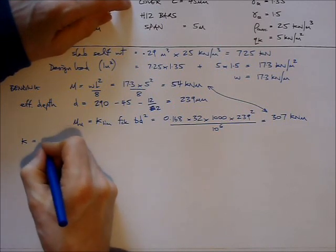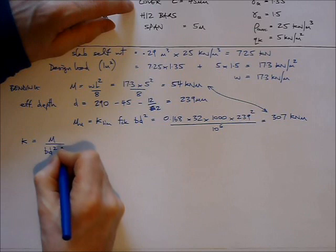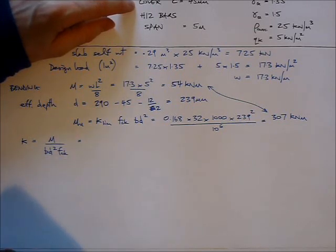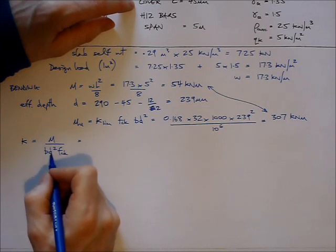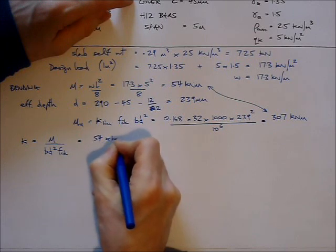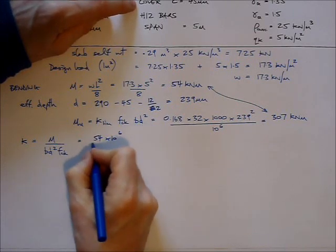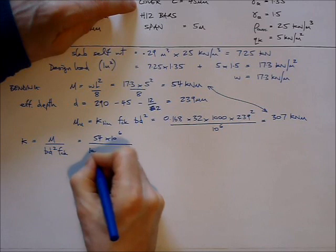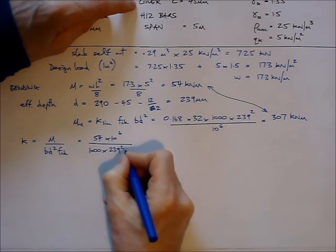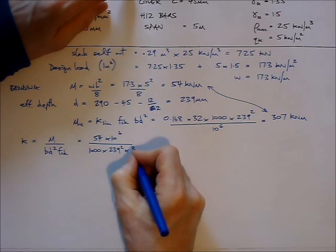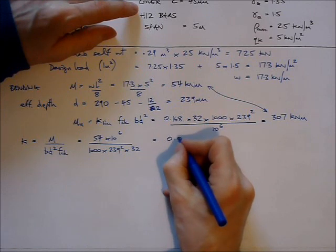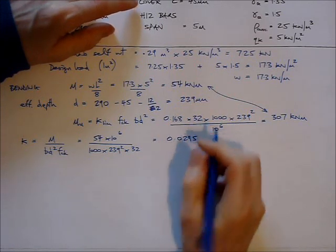The first thing I do is I have to work out just a factor, which is K. K is simply M over b × d² × f_ck. We know what all of these elements are and we want them in the same unit. So I'm going to take M as 54 and convert that into newton millimeters. b, d squared, so 1000 times 239 squared, times f_ck which is 32. All this comes out to 0.0295.